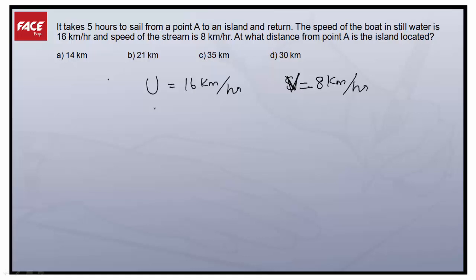So at what distance from point A is the island located? So it takes 5 hours to sail from point A to an island and return. So upstream plus downstream will be 5 hours. So I can call time taken during upstream plus time taken during downstream totally will be equal to 5 hours.